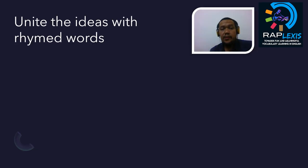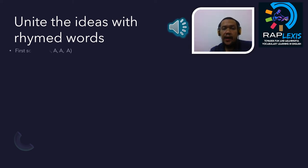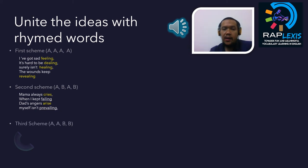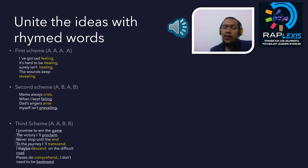This is the hardest part for the student — uniting the ideas with rhyme words. But there are a variety of rhyme schemes you can choose. For example, the first scheme is AAAA, where all the words in each bar rhyme together, like feeling, dealing, healing, and revealing. The second scheme is ABAB, like our traditional pantun — 'mama always cries' where cries rhymes with arise, and failing rhymes with prevailing. The third scheme is AABB — game rhymes with proclaim, and end rhymes with transcend. I also added some more to complete the 16 bars, using ABAB for the last lines.